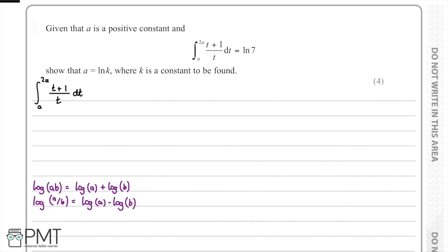In this question, a is a positive constant and we have the integral of (t+1)/t with respect to t, with limits from a to 2a. We know that this integral is equal to ln(7). The question asks us to show that a is equal to ln(k) for some positive constant k.